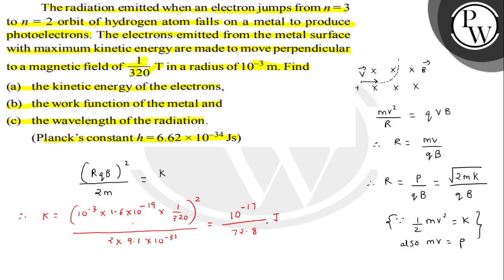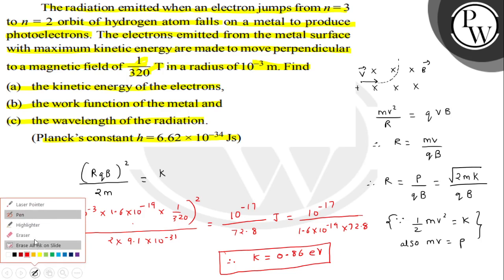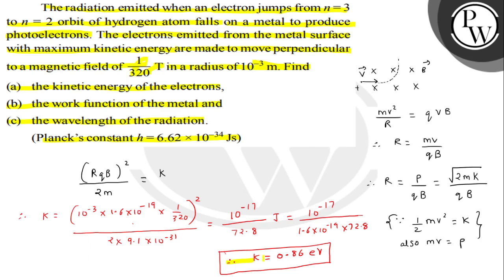After simplification, the value of kinetic energy K comes out to be 0.86 electron volts. This is the answer to the first part (Part A) of the question.